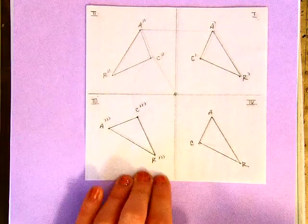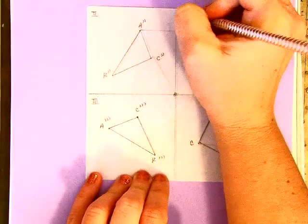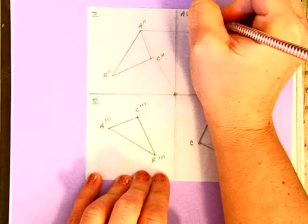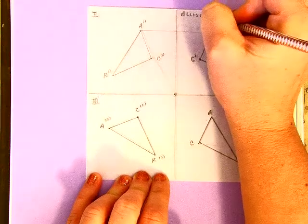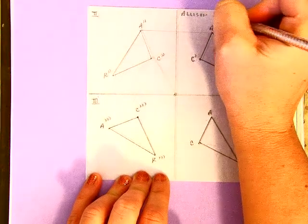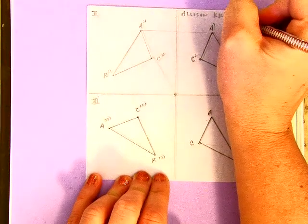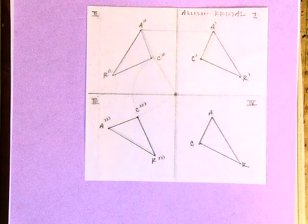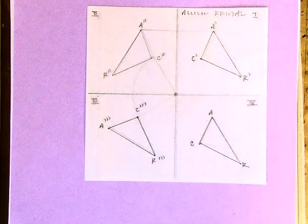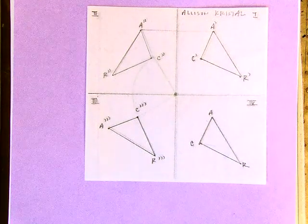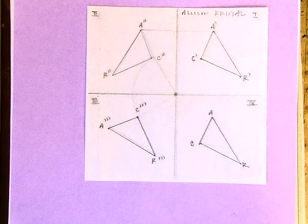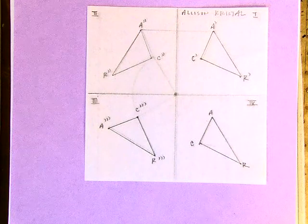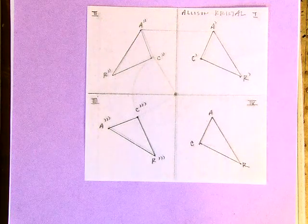Last thing I'm going to do is put my name on this — I'm going to write Allison Crystal up at the top. If you want to color it, that's fine; if you want to leave it as is, that's fine also. This will go in your next homework packet. Have a good rest of your day.